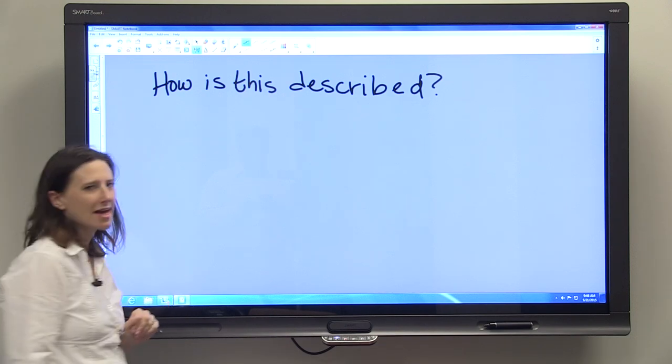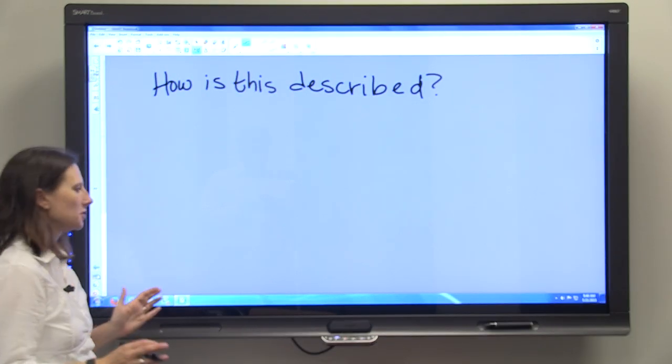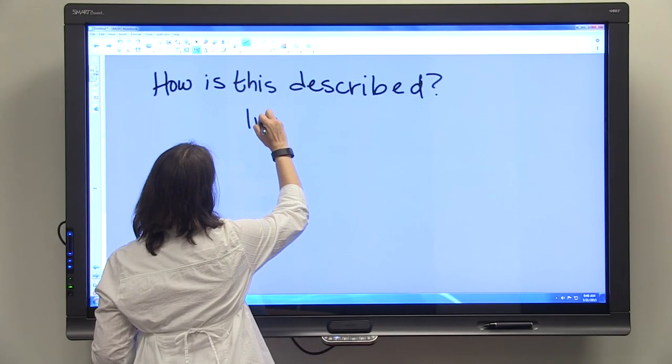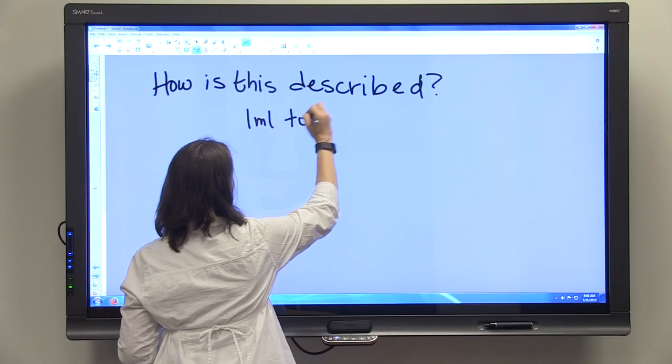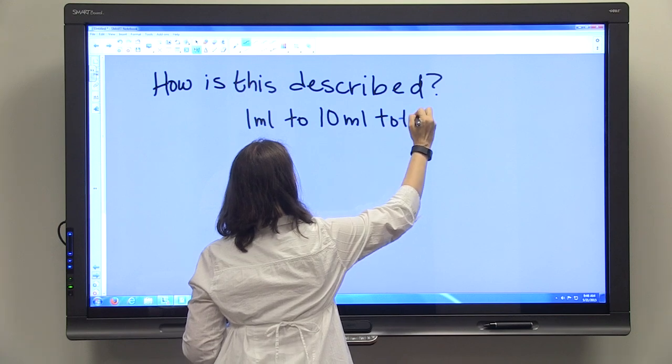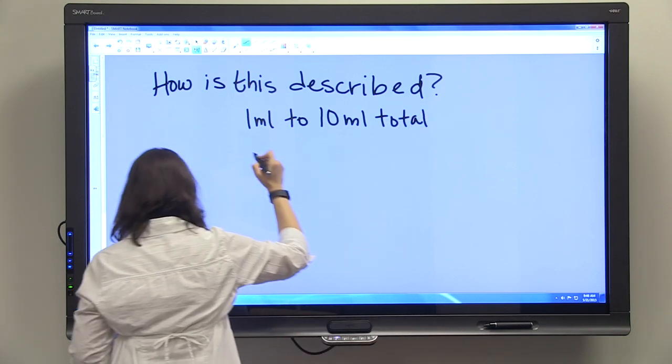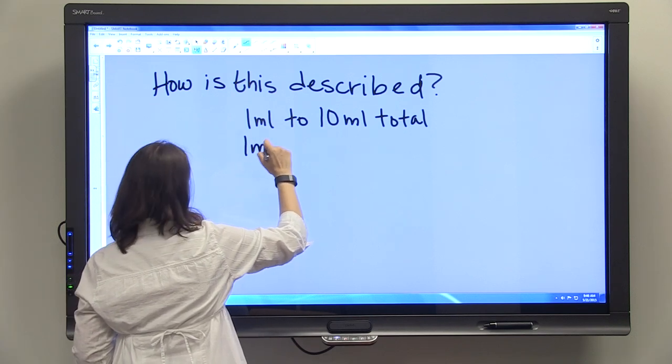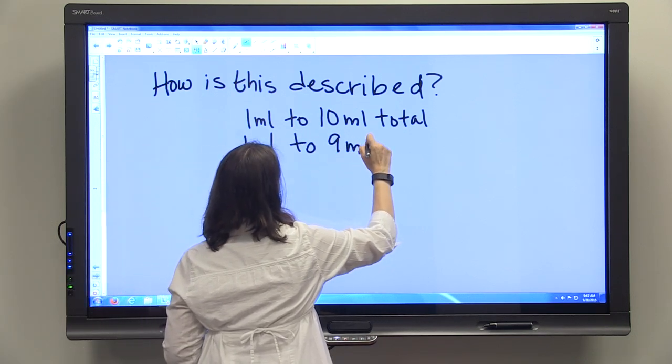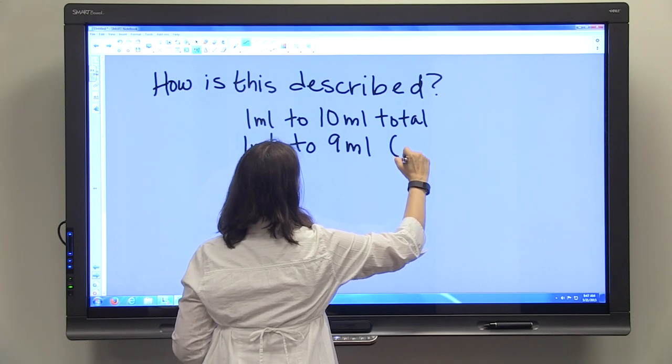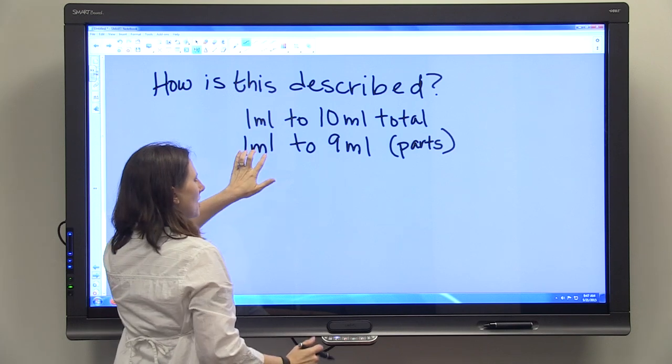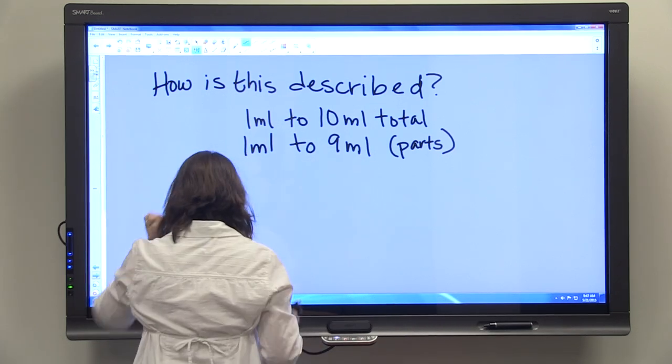So, how is that described? This is where dilutions can get complicated. That can be described as 1 ml to 10 mls total. It can be described as 1 ml to 9 mls if you're looking at parts. So it's one part stock solution and nine parts diluent.